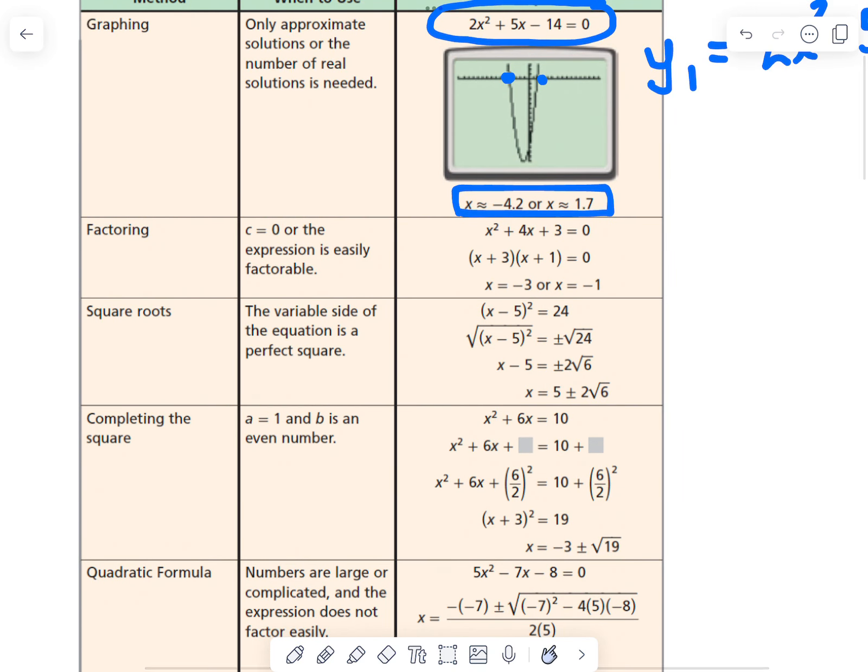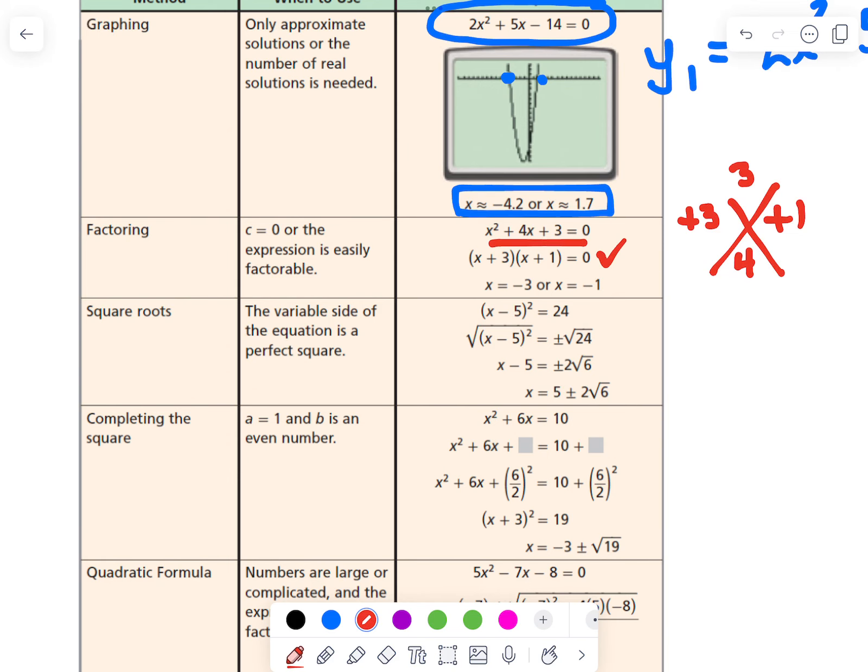The second method is we could factor it. So it's showing you an equation in standard form. We could set up our diamond. The top of the diamond is our factors of ac. We could add to the bottom of our diamond of b, which are positive 3 and positive 1. So then we have it in factored form. We use our zero product property and we get our two solutions.